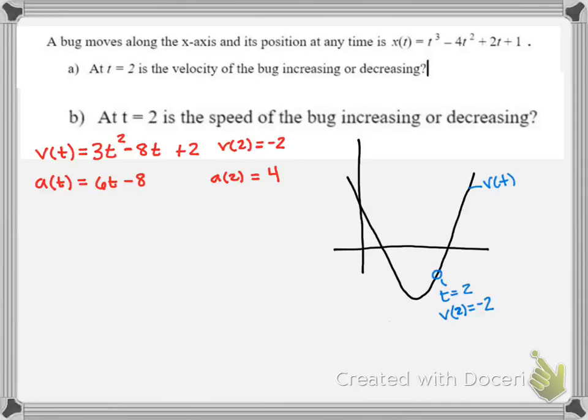In the second question, we are asked for speed, and so I've left some of the things that we calculated in part A on my screen. We found velocity at 2 was negative 2, and we found the acceleration at 2 was 4.